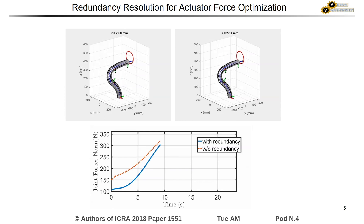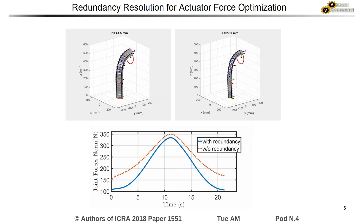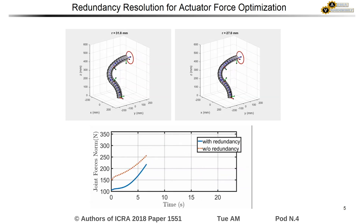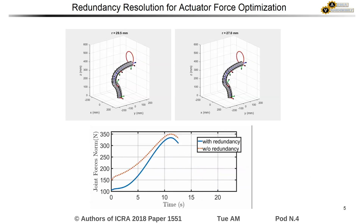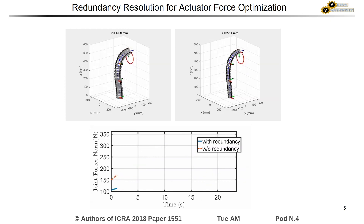For real-time control, we present a redundancy resolution algorithm that reduces the actuator loads while avoiding joint limits. These joint limits are imposed by the constraints of joint collision within the ASL, as well as spacer disk interference.